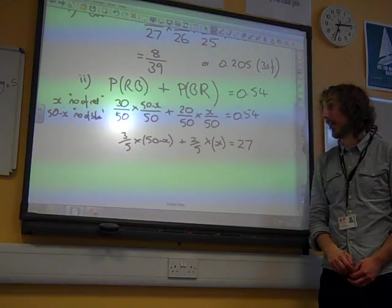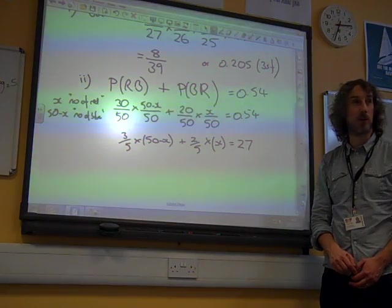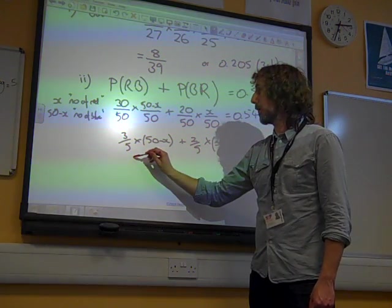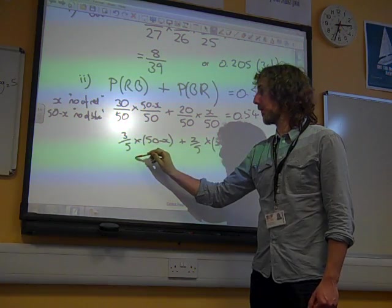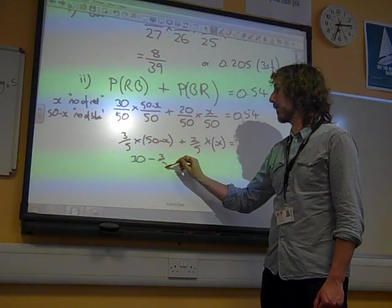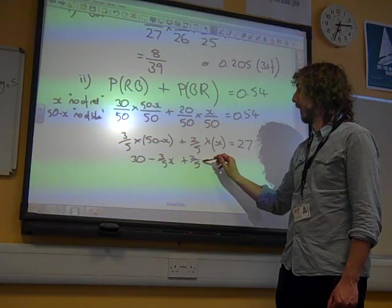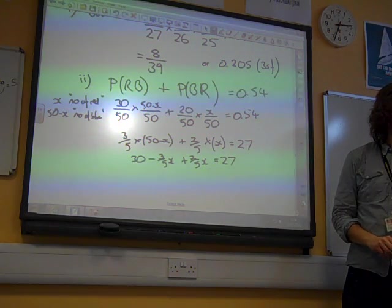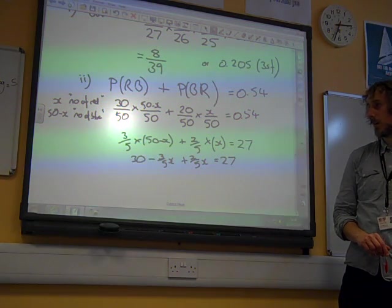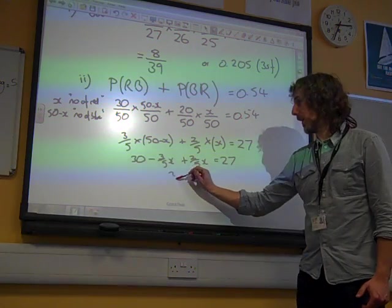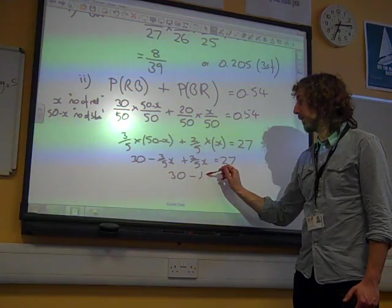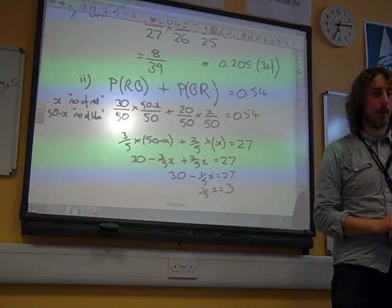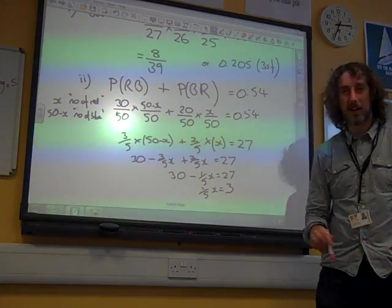We could times by another 5 if we wanted to get rid of all the fractions, or we could just deal with it. We've got 50. What is that? 30 minus 3 fifths of x plus 2 fifths of x is 27. So, a fifth of x is equal to 3 if we rearrange it. So, x equals 15.